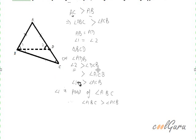If angle 1 is greater than ACB, and angle 1 is part of angle ABC, then if angle 1 is greater than ACB, this total angle ABC is obviously greater than ACB. So, this proves our theorem.